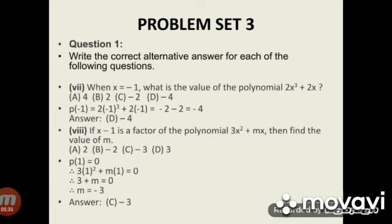Subdivision 7: When x equals minus 1, what is the value of the polynomial 2x cubed plus 2x? On solving, p(minus 1) equals 2 into (minus 1) cubed plus 2 into (minus 1), which equals minus 2 minus 2, equal to minus 4. Therefore the answer is option D. Subdivision 8: If x minus 1 is a factor of 3x squared plus mx, find the value of m. p(1) equals 0, so 3 plus m equals 0, therefore m equals minus 3. The answer is option C.